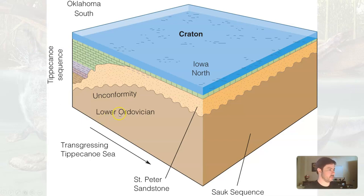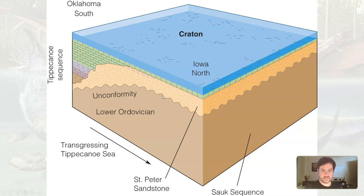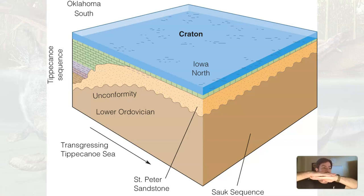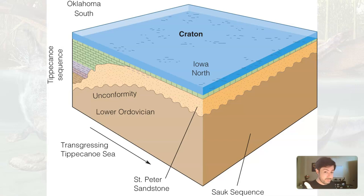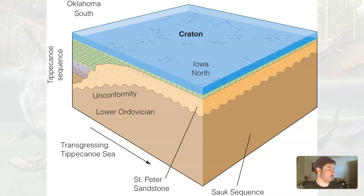We have Laurentia being covered during this transgressive event. We have this older Sauk sequence sedimentary rock, and now we get a new sequence on top. We have an unconformity because we had Sauk sequence deposition, then a stop of deposition, and that material weathered and eroded, and then new sedimentary layers formed on top. So we have a gap in time — missing information. That is a disconformity, which is missing information between two sedimentary rock layers.